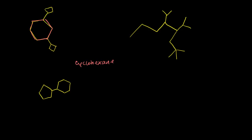And then we have two of these four-carbon rings. So four carbons — we're dealing with the prefix bute- for four — and we've got two of them. So both of these are butyl groups. But they're in a cycle, so they're actually cyclobutyl groups.